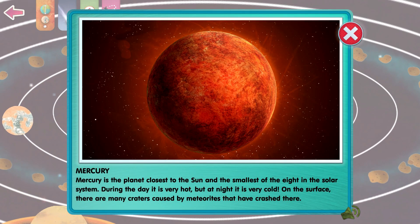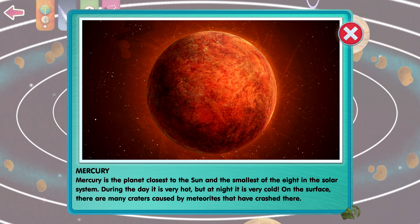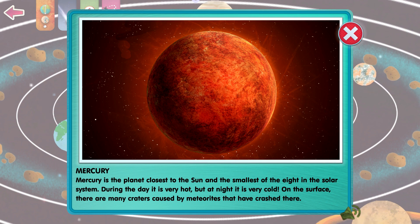Mercury is the planet closest to the Sun and the smallest of the eight in the Solar System. During the day, it is very hot, but at night, it's very cold. On the surface, there are many craters caused by meteorites that have crashed there.